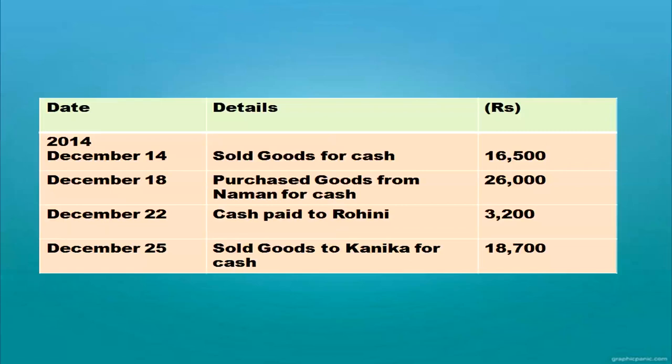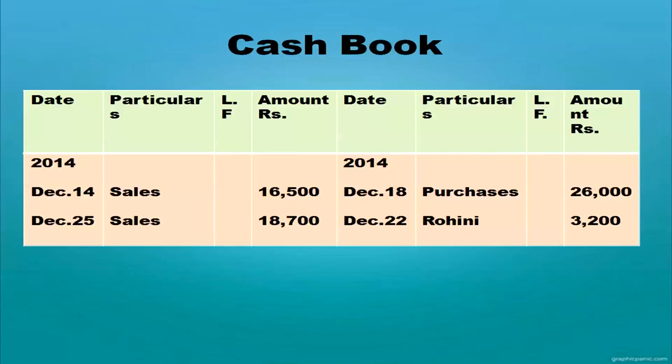Some more transactions: sold goods for cash — cash account debit to sales; purchased goods from Naman for cash — purchases debit to cash; cash paid to Rohini — Rohini debit to cash; sold goods to Kanika for cash — cash account debit to sales. In the cash book, December 14th cash sales — posted on the debit side. December 18th purchase goods for cash — posted on the credit side because it is an expense, all payments go on the credit side.